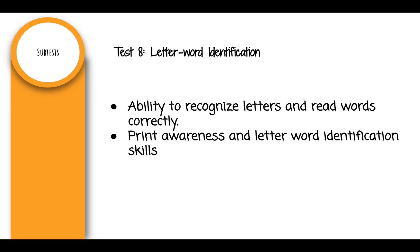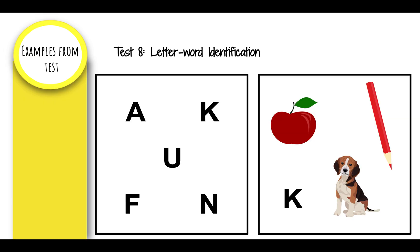Test 8: Letter-Word Identification. This subtest measures the ability to recognize letters and read words correctly, including print awareness and letter-word identification skills. There are a variety of test questions within this subtest. The first type has just letters on the page — you ask them to identify the letter K and they point to it. Other questions have a combination of both pictures and letters. You ask them to point to the letter K, and they recognize that there are both letters and pictures on the page. Some questions have words in a straight row rather than jumbled on the page.